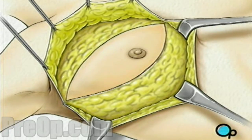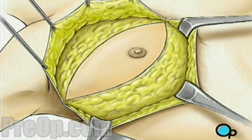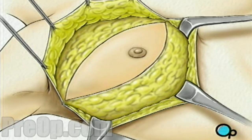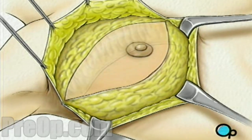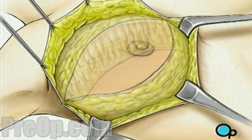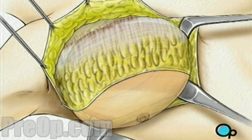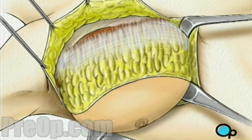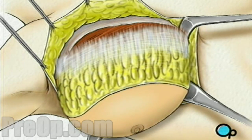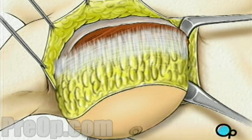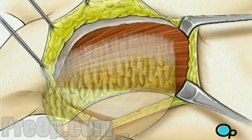Beginning at the clavicle, or collarbone, the surgeon then begins to carefully cut the breast tissue away from the muscles that lie just beneath. When the breast has been completely freed, it is lifted away, exposing the top layer of muscle called the pectoralis major.